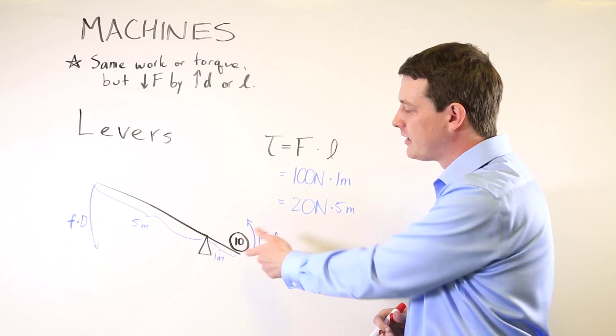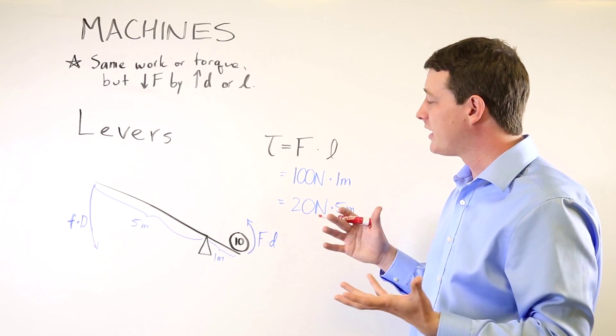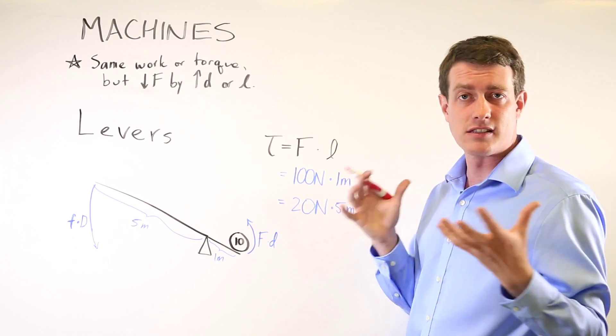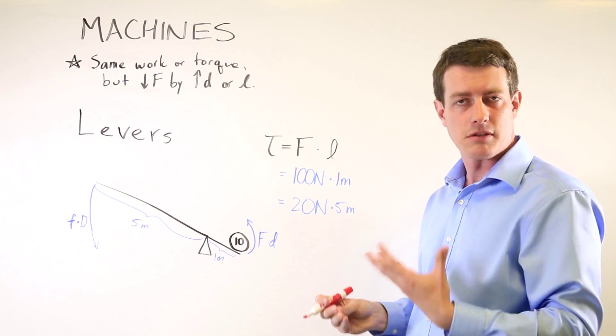Here again, we have a 10 kilogram object. In order to lift that, you need 100 newtons because that's the force of gravity times the mass of the object.